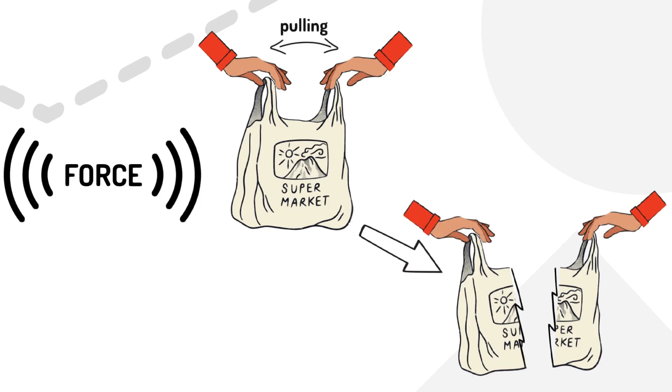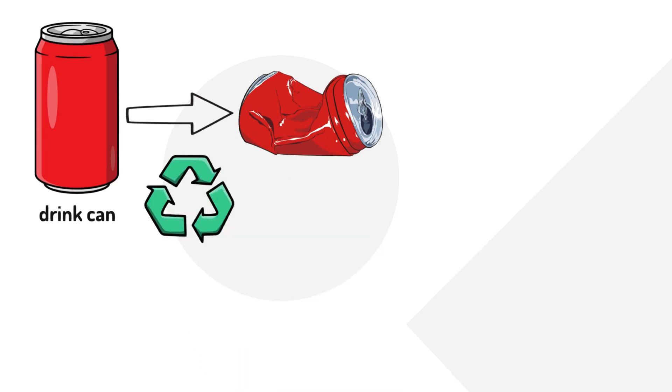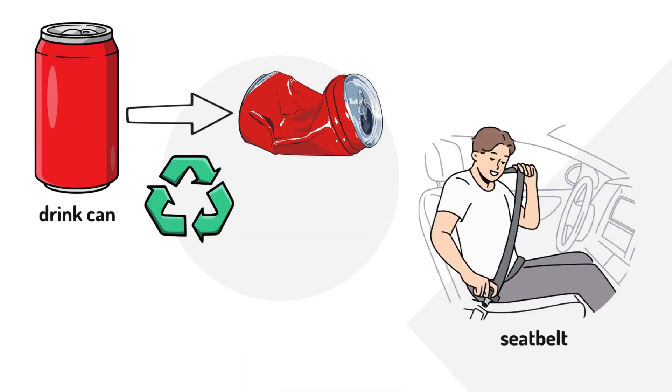Some objects are designed to change shape on purpose. A metal drinks can is crushed with a push and that makes it easier to recycle, while a seat belt tightens up when it's pulled to keep you safe.